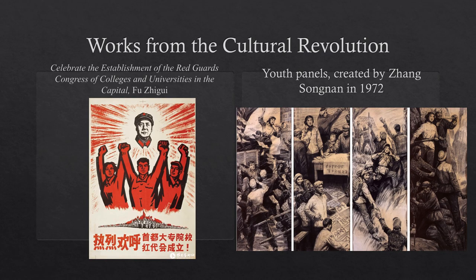In case you guys forgot, I provided two examples of artwork done during the Cultural Revolution. One is on the left — it's a woodblock print by Fu Zigui. I don't want to butcher it and discredit his beautiful work. It's called Celebrate the Establishment of the Red Guards, Congress of Colleges and Universities in the Capitol.